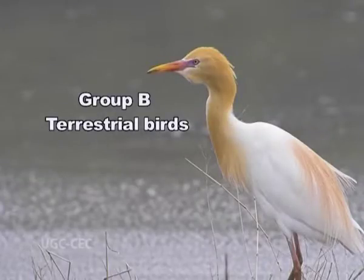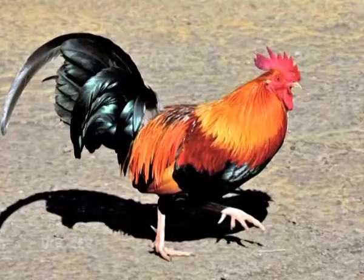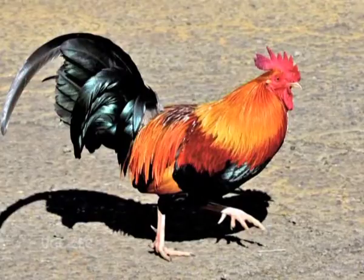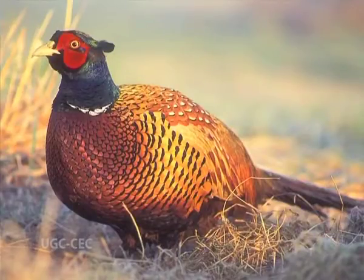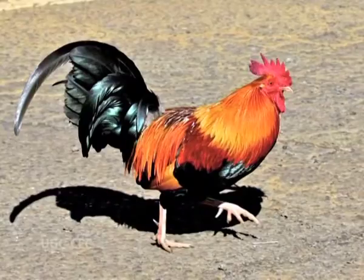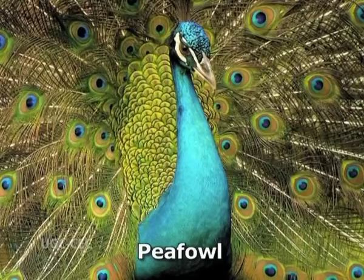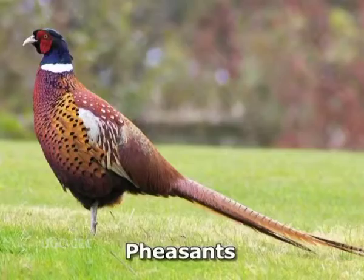Group B: Terrestrial birds — though perfectly able to fly, these birds spend most of their time walking or running on the ground. Order 5, Galliformes — gallus meaning cock-like form. They are large game birds notable for their palatability. Beak is short and feathers are with aftershaft. They have giant scratching feet and short yet powerful flight. Largely graminivorous. Examples: red jungle fowl, peafowl, quail, grey partridge, and pheasants.